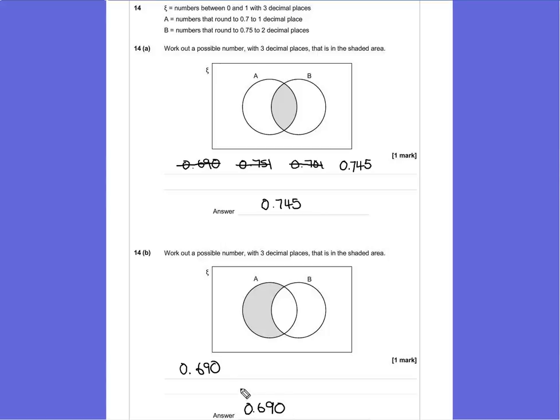Any number that you choose between 0.650, because that would round up to one decimal place to 0.7, so 0.650. Anything between that and the point where this no longer rounds up, so to 0.744, would also meet the criteria.